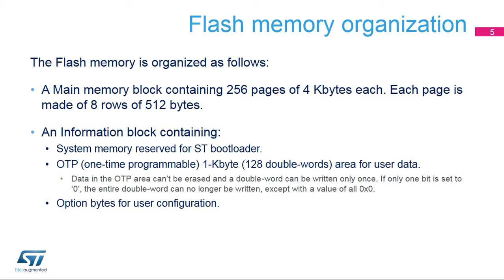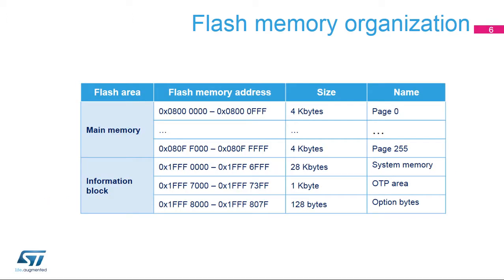If one double word bit is at zero, the entire double word can no longer be written, except with the value all zeros. Programming a previously programmed double word is only allowed when programming all zeros. The last part contains the option bytes for configuring user options. This slide shows the flash memory map. There are 256 pages for the main memory, starting from page zero. The page number is used in the software procedure to erase a page.